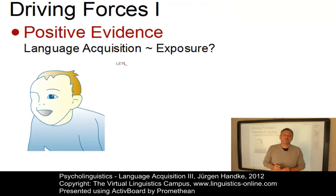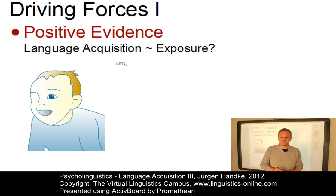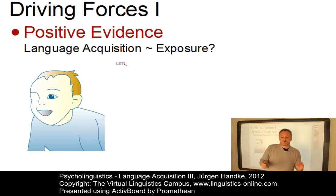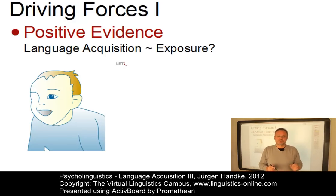Children definitely have to be exposed to a language in order to acquire it. They need the opportunity to hear and understand words, phrases and sentences within meaningful contexts first, before they can begin to produce language meaningfully. Comprehension thus necessarily precedes production in language acquisition. However, the exposure does not have to be direct. In some cultures, adults do not speak to children at all until the children are using at least some words in a meaningful manner.